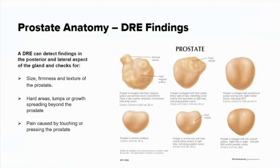When a physician performs a digital rectal exam, the index finger is inserted into the rectum. The physician then swipes his finger back and forth, feeling the prostate for any abnormalities. A digital rectal exam can detect findings in the posterior and lateral aspect of the gland and checks for size, firmness, and texture of the prostate, hard areas, lumps, or growth spreading beyond the prostate, or pain caused by touching or pressing the prostate.